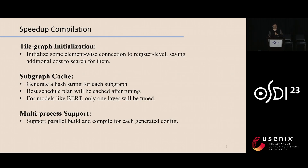Welder uses several techniques to speed up compilation. First, the TileGraph is initialized at the very beginning by setting some elementwise connections to register level, saving the cost of searching for them. Welder also adds a subgraph cache so that for each subgraph tuned, the best configuration is cached and immediately reused the next time the same graph structure is encountered. For models like BERT where each layer is identical, we only need to tune one layer.